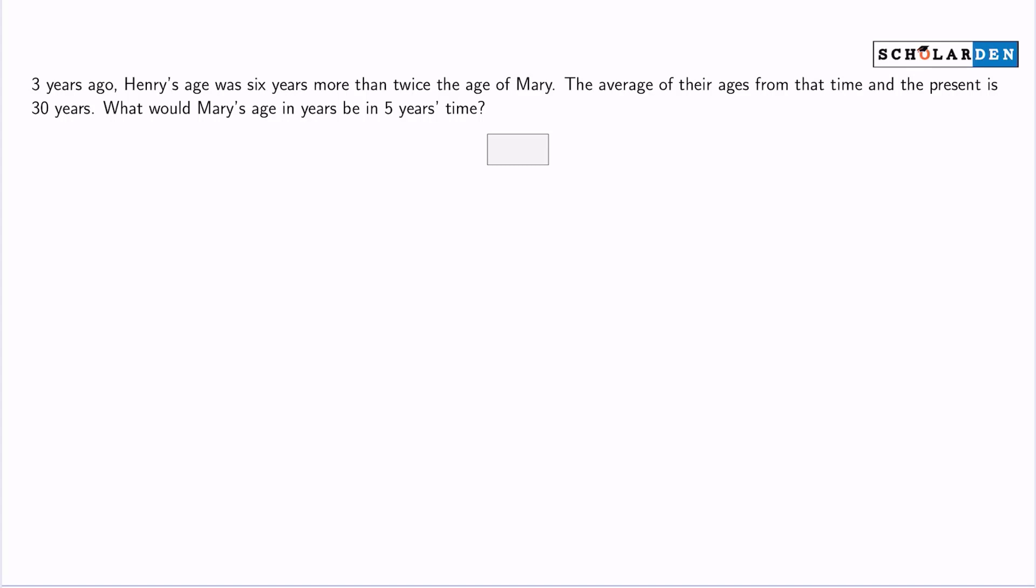All right, so the answer here is 25. Let's explore this. We're talking about two people, Henry and Mary, and what we're trying to figure out is Mary's age in five years.